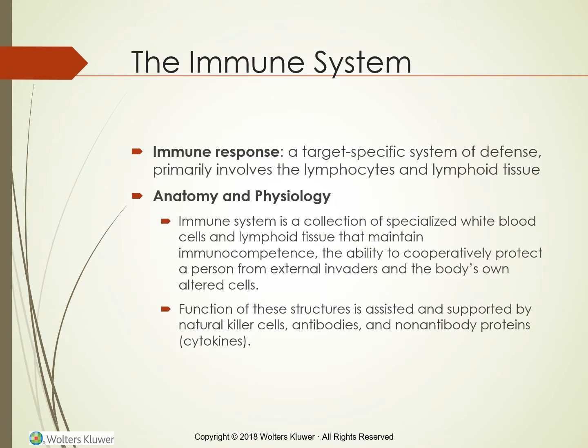Although all humans have the same types of cells, each person's cells are unique and different from those of all others. Everyone's body cells are coated with distinct histocompatibility, which are tissue cell markers. These markers act as a fingerprint that enables the immune system to differentiate self from non-self. When it detects a non-self substance, the immune system protects, defends, and destroys what it perceives as atypical or abnormal. Its primary targets are infectious, foreign, or cancerous cells.